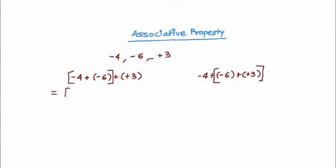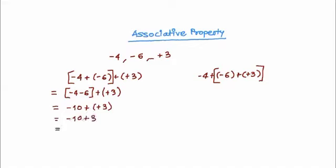Solving inside the bracket: minus four stays, and plus and minus are different signs, which always result in minus. So minus six plus plus three — minus four minus six, same sign, means it is going to be addition. Six plus four is 10, and the sign of the greater integer — here it is six and sign is minus — so we give minus sign. So minus 10 plus plus three — same sign results into positive — so plus three minus plus is subtraction. Ten minus three is seven, so the answer is seven and it gets the sign of the greater integer, which is minus. So we get minus seven.